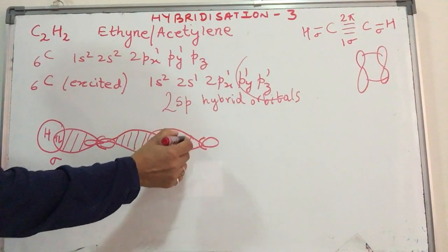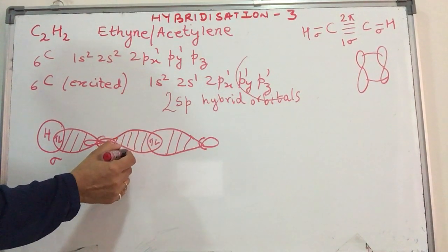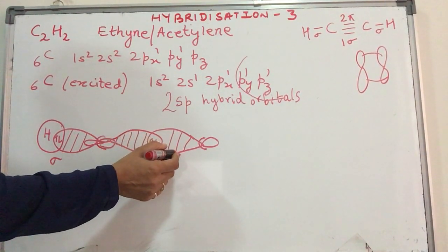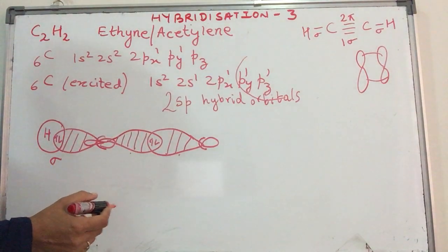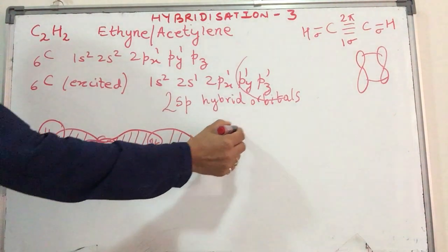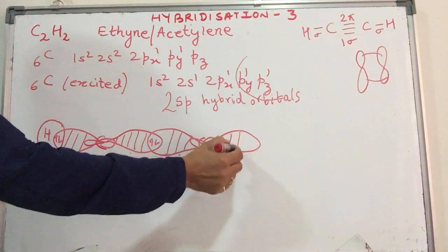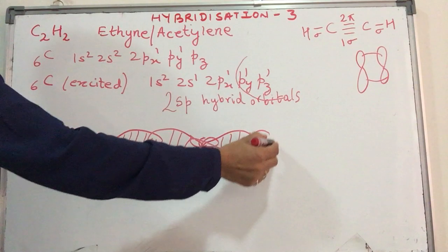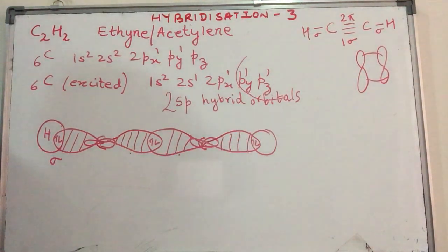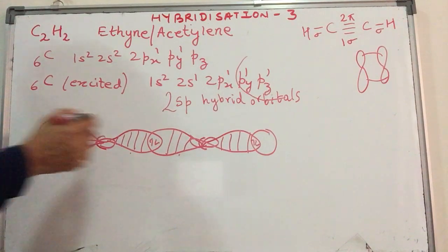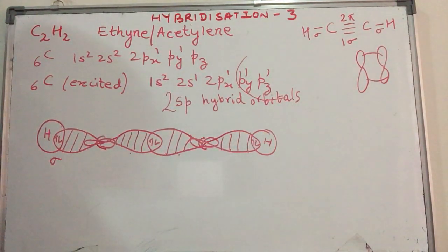This other hybrid orbital in turn overlaps with the hybrid orbital of the second carbon atom and forms an sp-sp overlap. Again, the electrons become paired up. The 2nd carbon also forms a sigma bond with the hydrogen atom in order to pair up its unpaired electron. Now if you notice, the valencies or the unpaired electrons are still not satisfied.